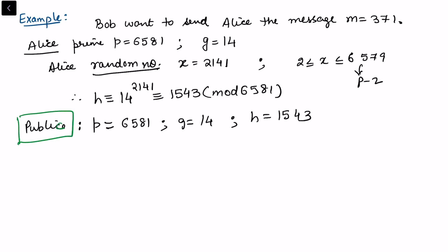Now she wants to look for the private information. Privately she has kept, let's keep that also. Private information is x, and we have calculated x as 2141. That is the private information with Alice.